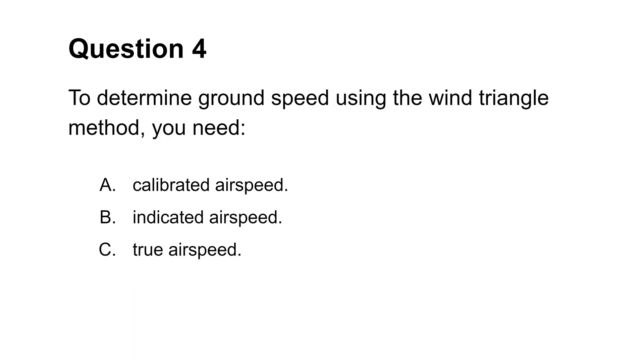The next question wants you to identify measurements needed to determine ground speed with the wind triangle method. The wind triangle method uses true airspeed, aircraft heading, wind direction, and wind speed to determine the aircraft track and ground speed. Both indicated and calibrated airspeed measurements are inadequate for this task. You must know the aircraft true airspeed. This makes choice C the answer.